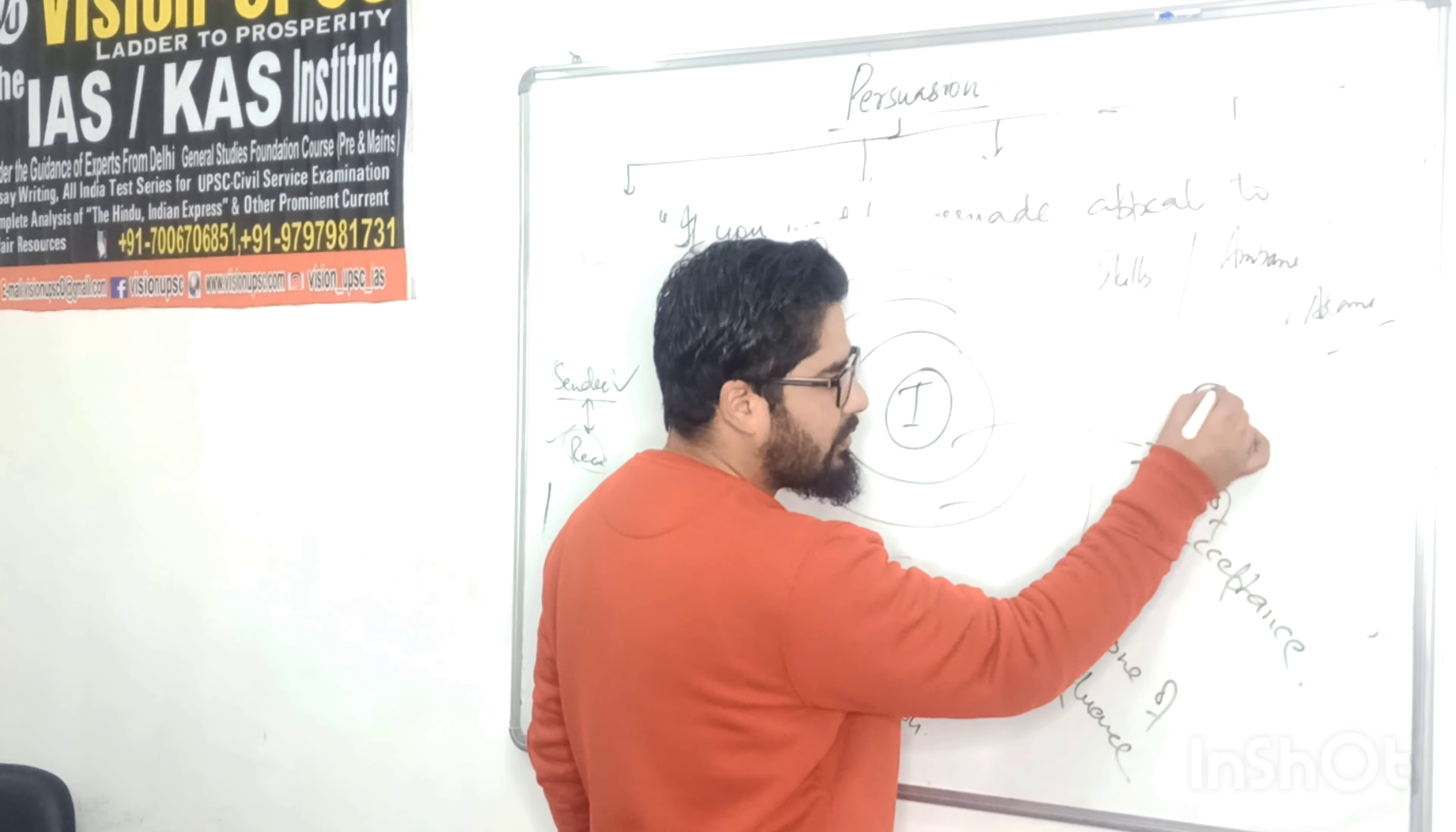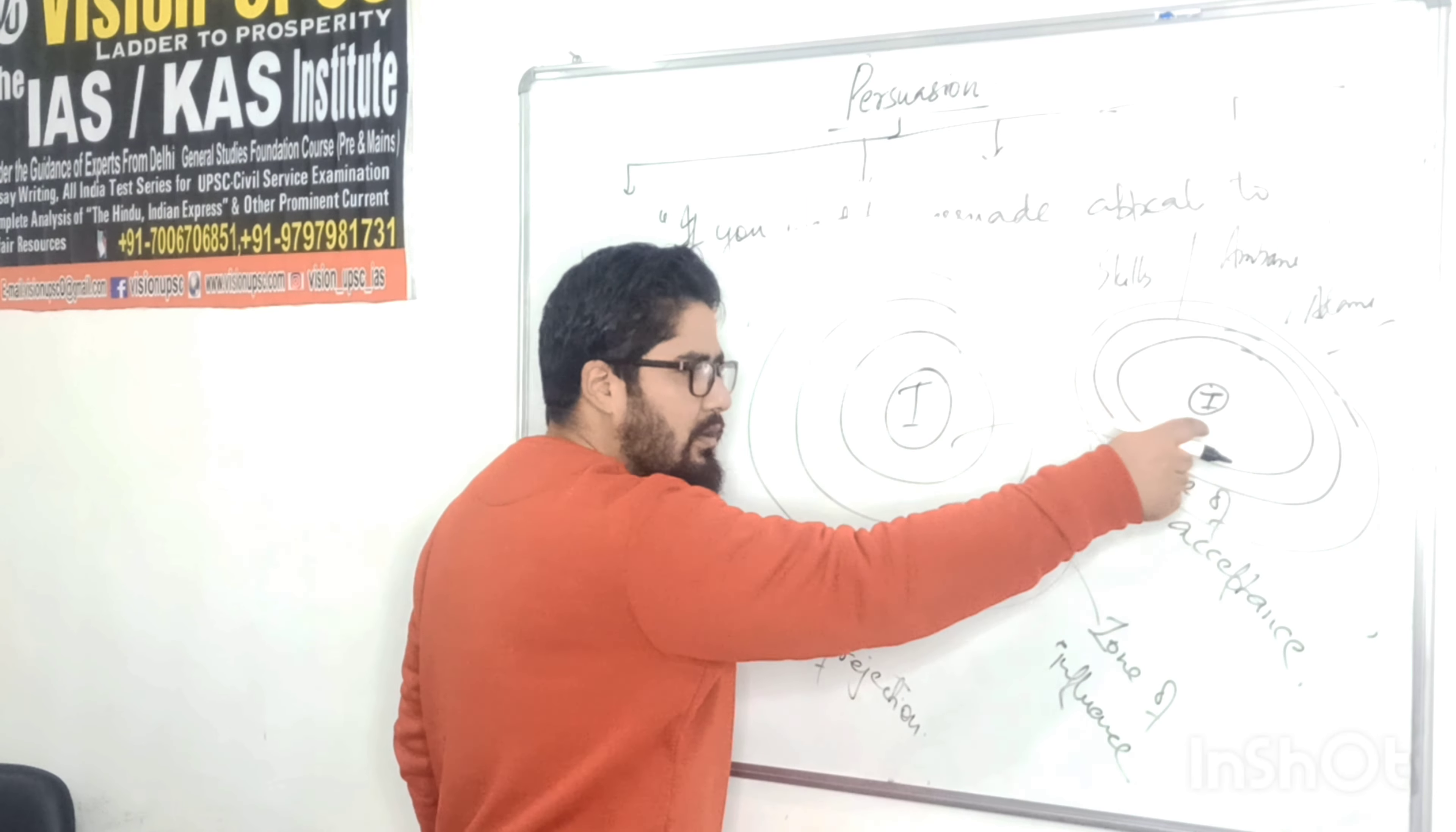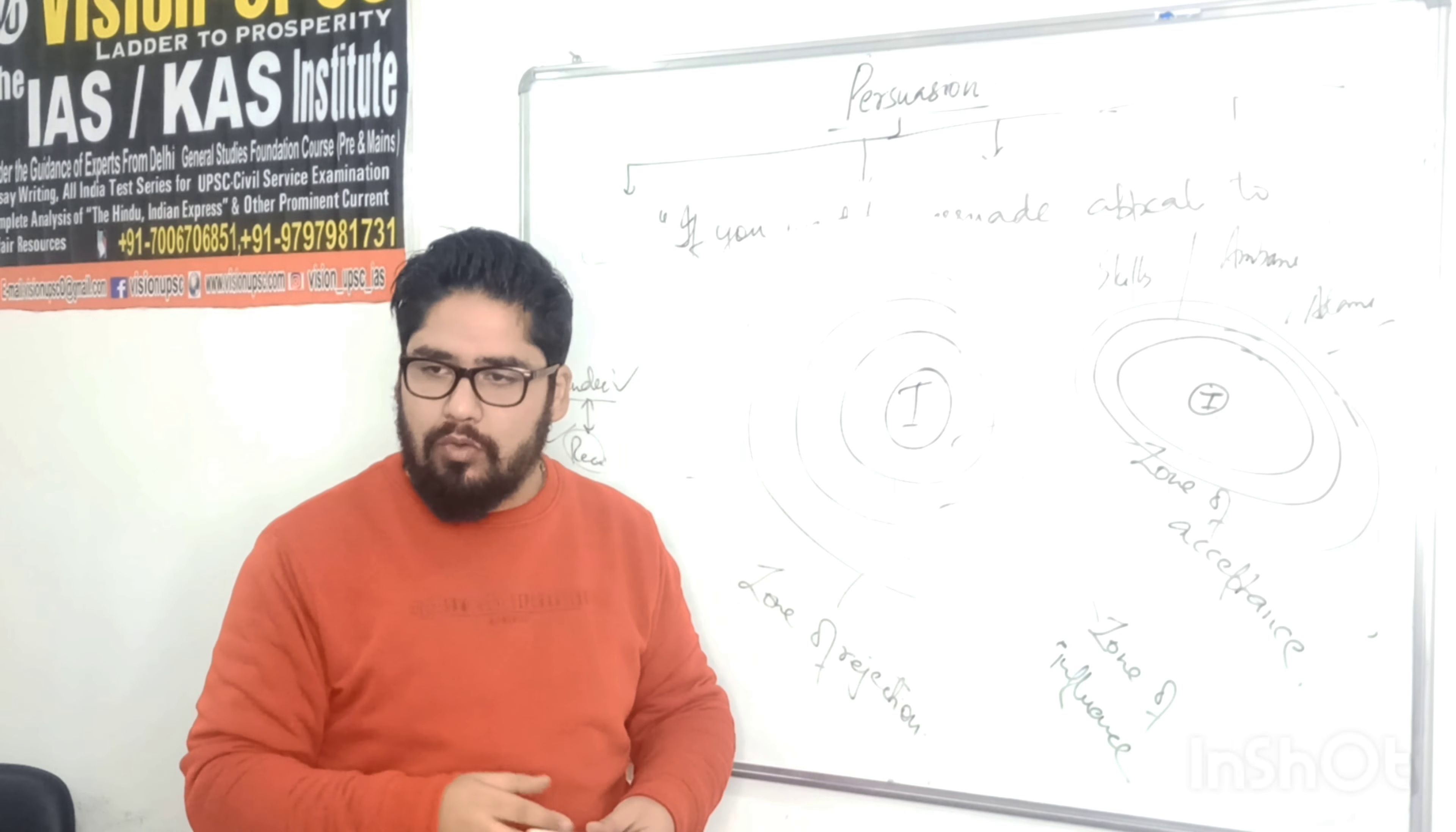This is the individual, this is the zone of acceptance, this is the zone of influence, and this is the zone of rejection. This person is likely to get influenced more as compared to this person because the zone of acceptance, or wide parameters of societal things, is large. First you have to identify through the study of value system and attitude.